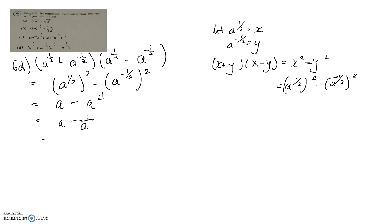We can leave the answer as a minus 1 over a. Alternatively, if you want to express it as a single fraction, it would be a squared minus 1 over a. There was a very quick video on simplifying expressions with positive indices — I hope that has been clear. Once again, this video was aimed at my students who had trouble with their homework, not for introducing the law of indices. If you have problems with the law of indices, please revise it. Do submit your comments on how I can make these videos better. Thank you very much.